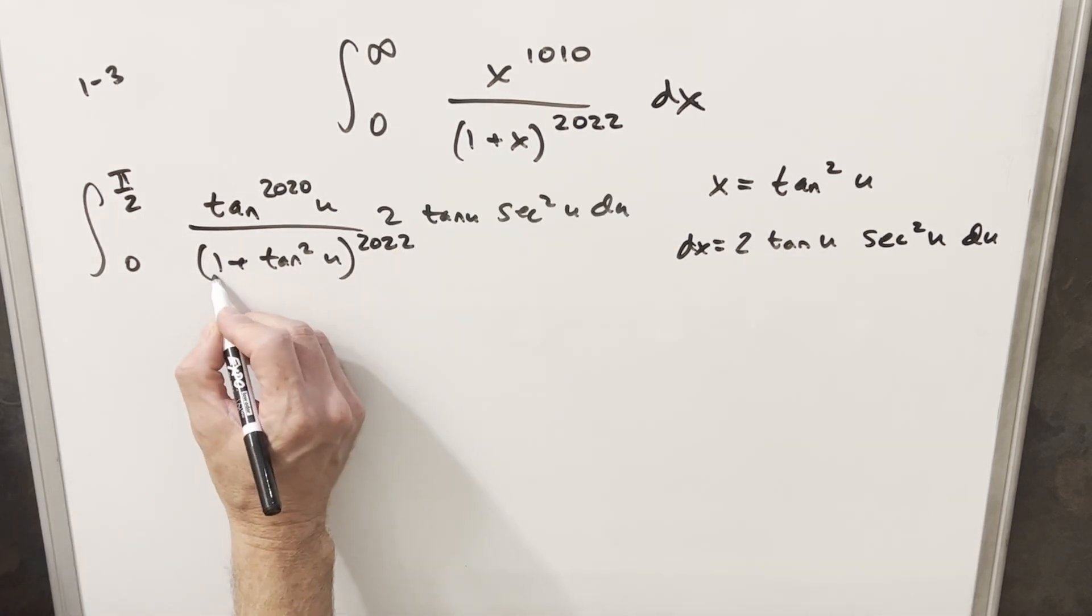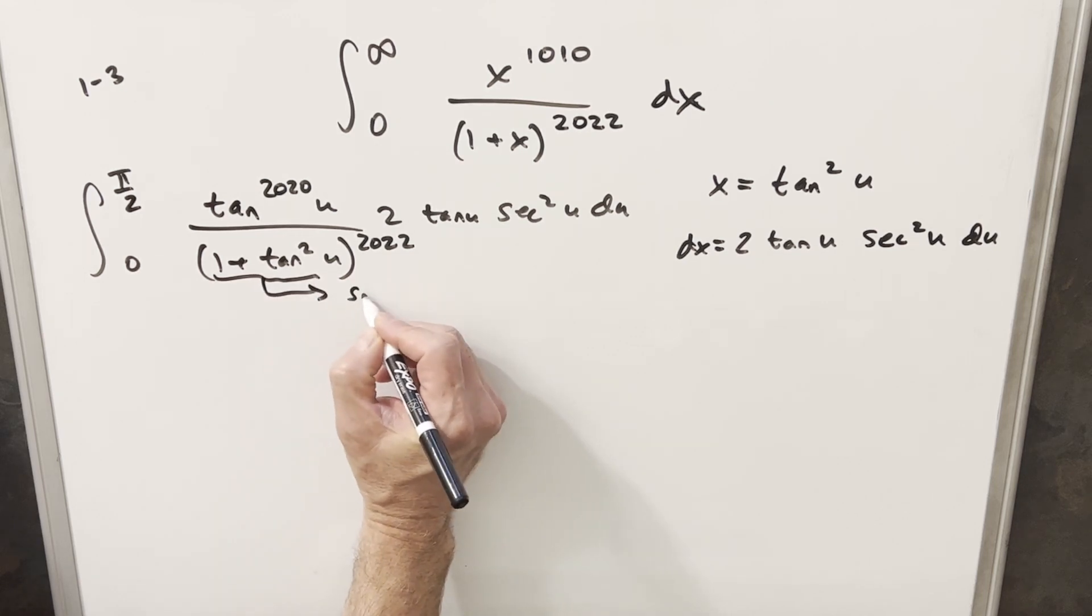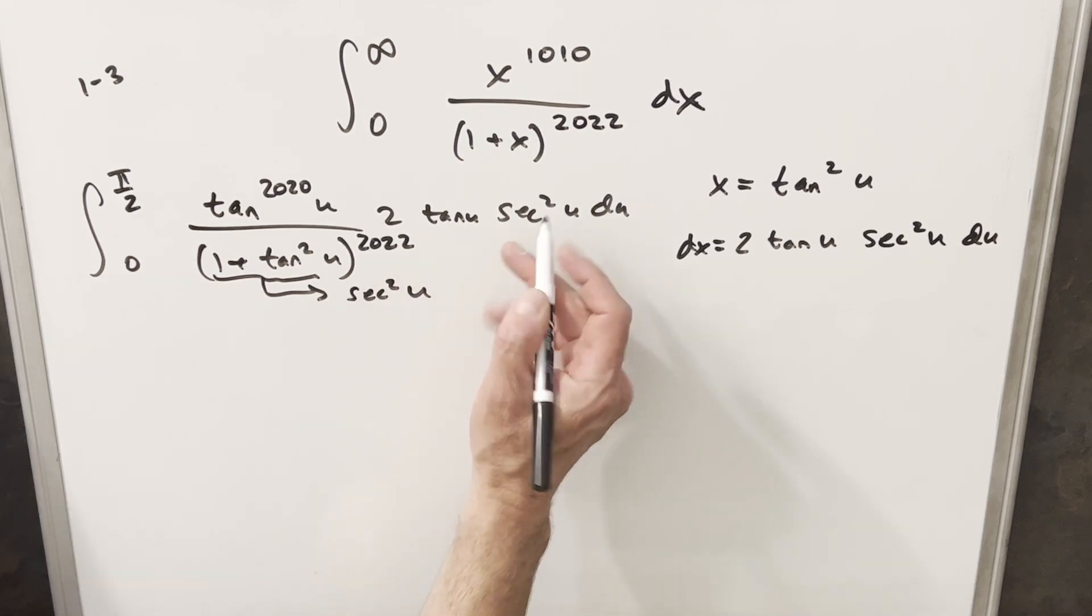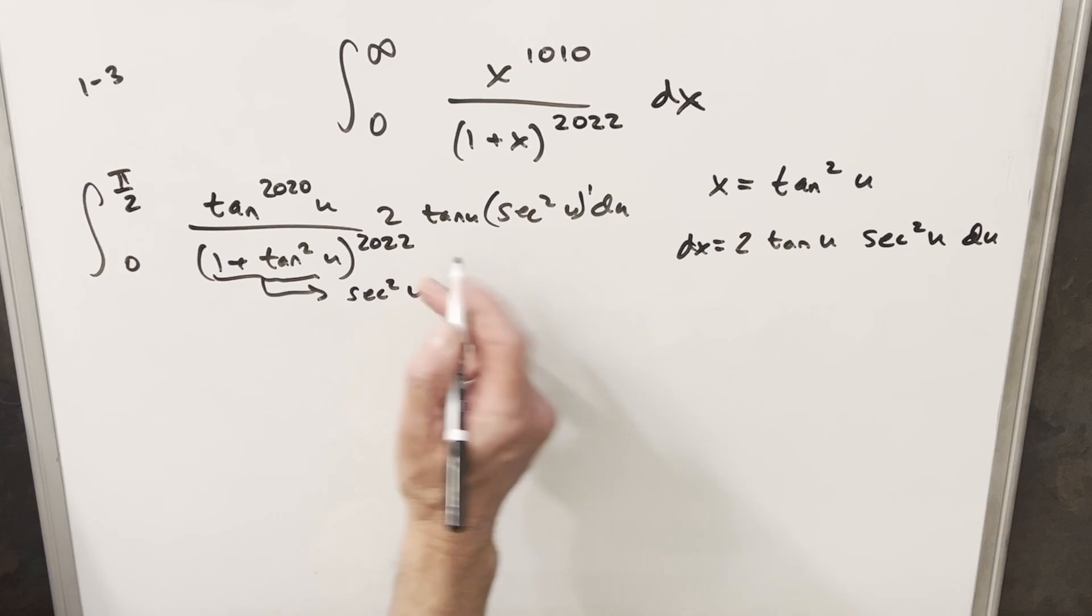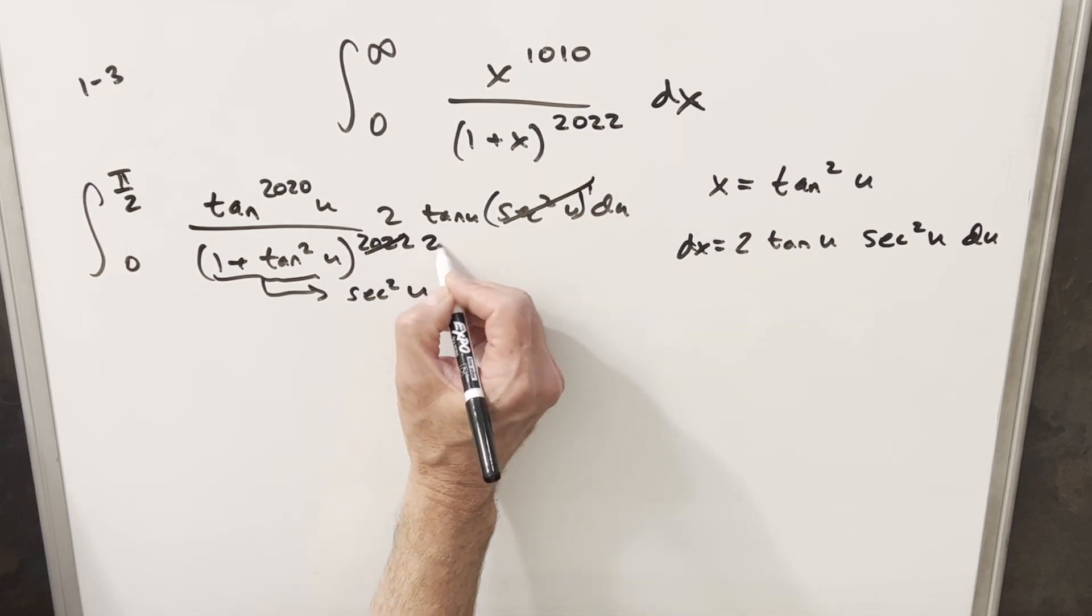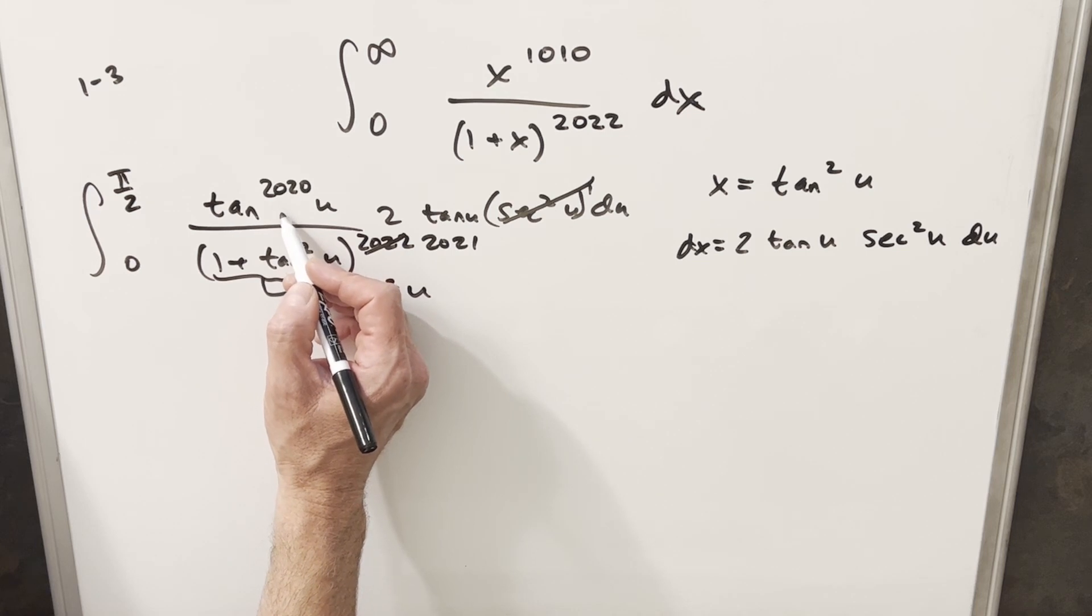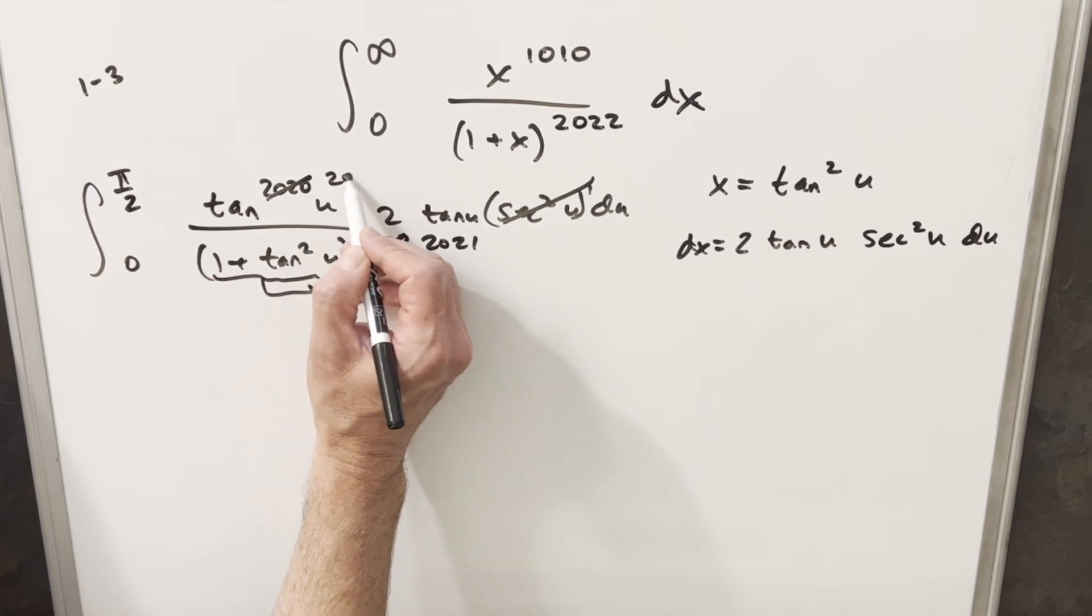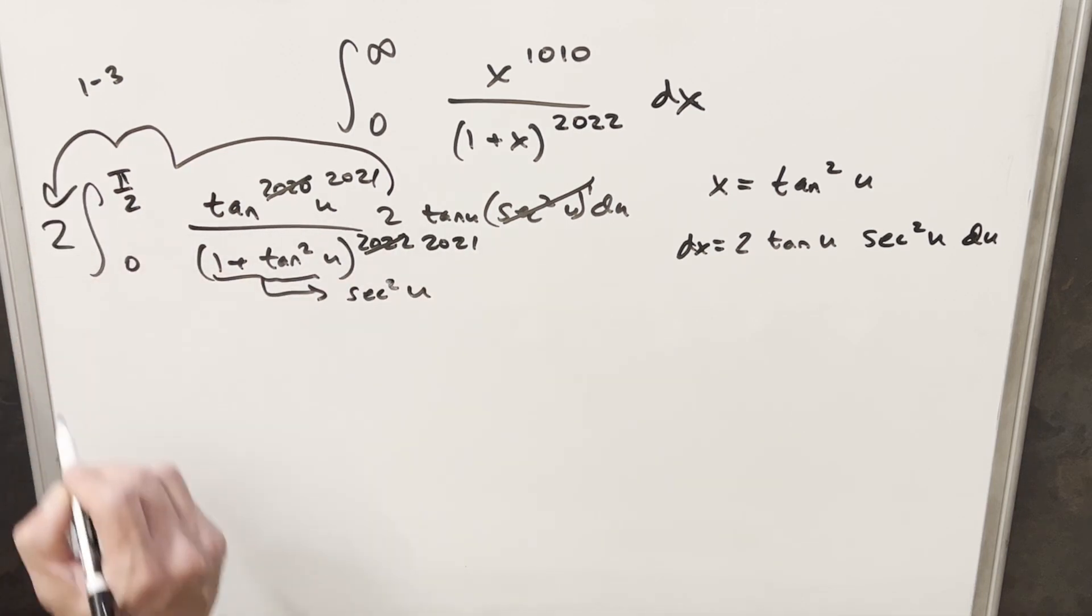And then before we continue, we'll just notice this identity. 1 plus tan squared is the same thing as secant squared of u. And notice we have 1 secant squared u here in the numerator and 2022 of them here. So I'm just going to cancel this and reduce this to 2021. Similarly, I can multiply this tan of u times 2020 tan of u and make this 2021. And I'm just going to bring my 2 out front of the integral.